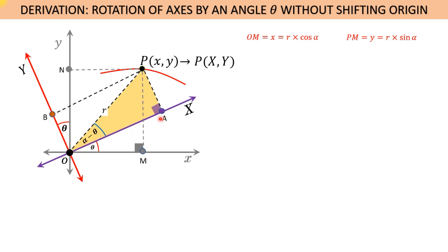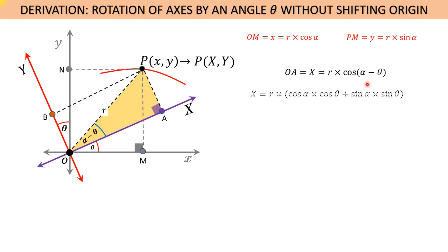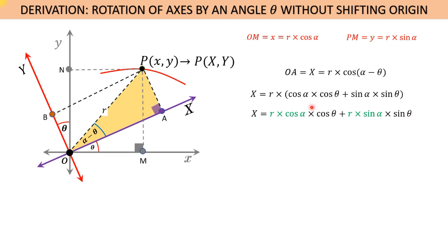As per construction in right angle triangle PAO, the length of OA is equal to capital X, which equals r·cos(alpha − theta). Now we will use the sum-and-difference formula and write it as r times (cos(alpha)·cos(theta) plus sin(alpha)·sin(theta)). Multiplying through by r gives r·cos(alpha)·cos(theta) plus r·sin(alpha)·sin(theta).